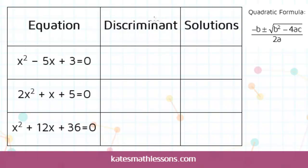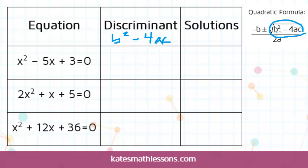The discriminant is just the number that you end up with under the square root. It's the b squared minus 4ac part. So you're not doing the entire quadratic formula — you're just figuring out what number would end up under the square root.